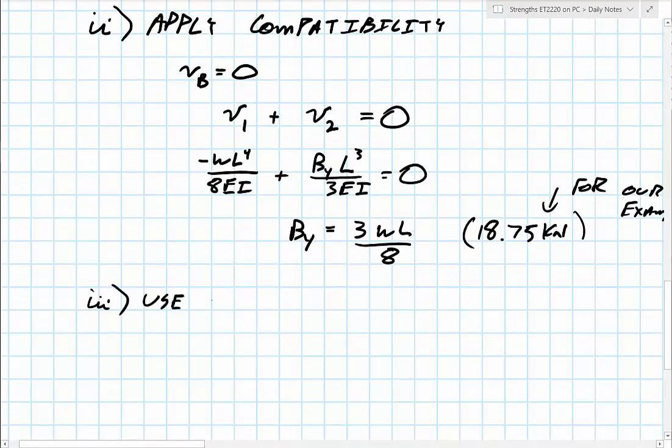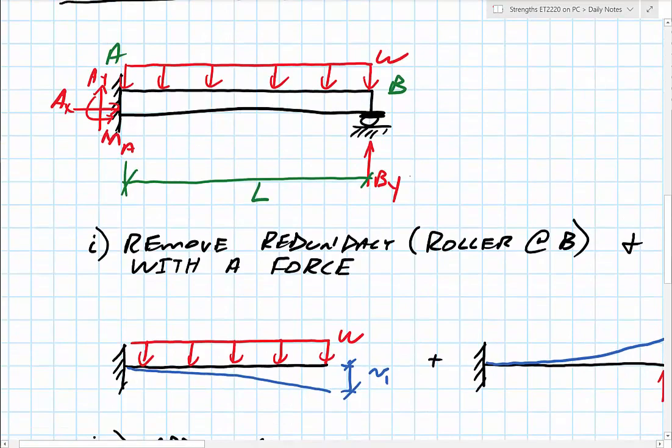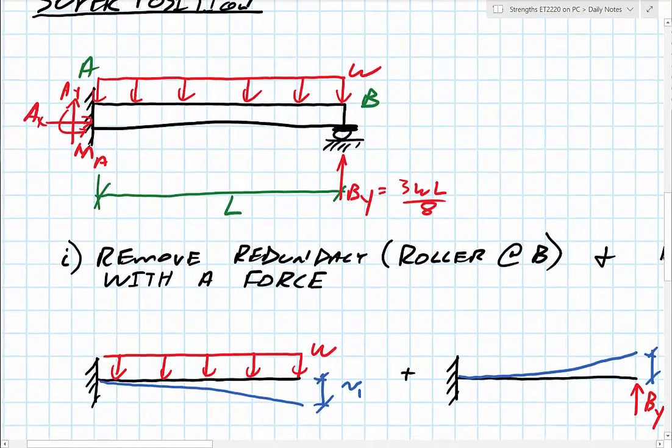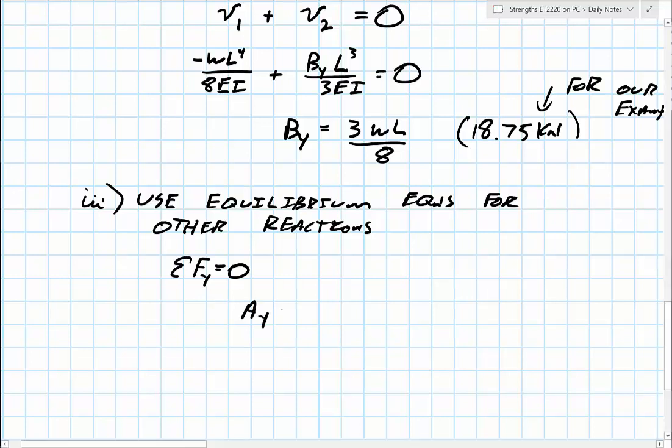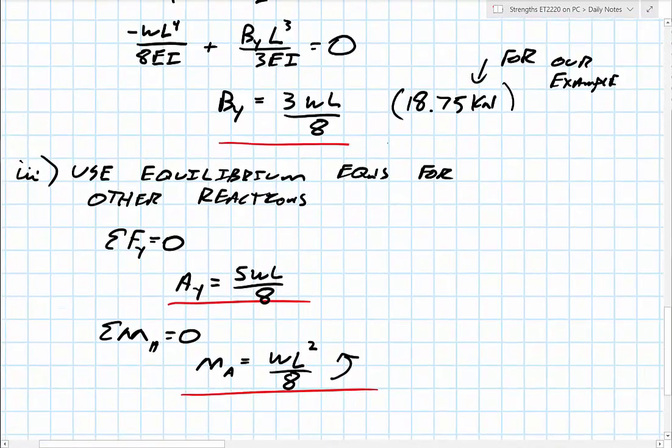So that is our third step in this process. We are going to use the equilibrium equations for other reactions. So in this case, what I would do is I would start with sum of the forces in the Y direction equals zero. And, once again, now I know this, this BY, three WL over eight. And I can see AY would have to handle the remainder of the total load, which would be WL. So from that, I'd end up with AY as five WL over eight, because I need eight over eight WL, right? One WL or something. And then the other one that I would need is the moment reaction. So sum of the moments about A equal zero. If you did this, you'd find the moment at A is equal to WL squared over eight. So that gives us our three reactions for A, B, and a moment.